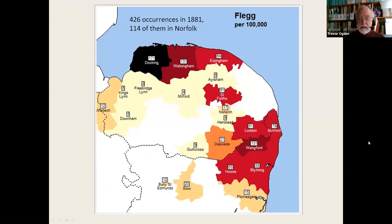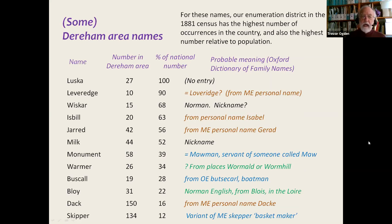Fleg is on the east coast of Norfolk, just north of Yarmouth. These are the Fleggs in 1881, and they have moved elsewhere too. It makes sense that a locative name is applied to people who have actually moved away from somewhere — it wouldn't be much point applying it to people who still live there, because everyone would have that name. So it's easy to understand how that can happen.